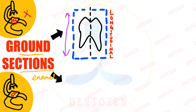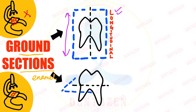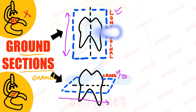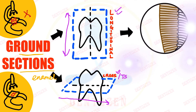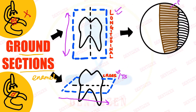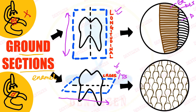If the sections of the teeth are cut along the long axis of the tooth, they are called longitudinal sections. If the sections are cut along the horizontal axis, they are called cross sections or transverse sections. Enamel rods in longitudinal section appear as rods running from the dentino-enamel junction outward, with the dentino-enamel junction visible between the rods and dentine.